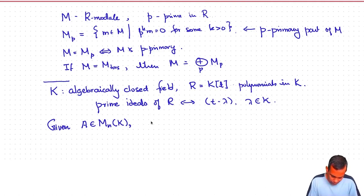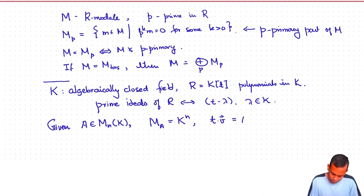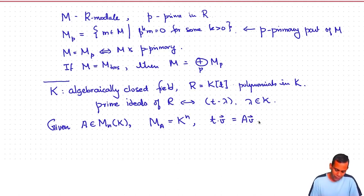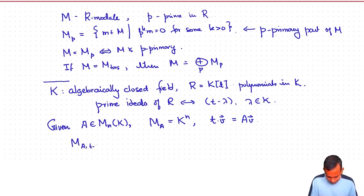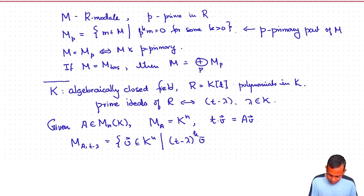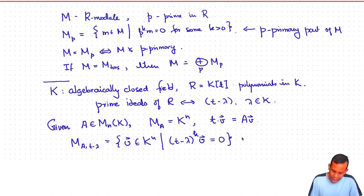Given a matrix A, you can talk about its T − λ primary part. Recall that M_A is the K[T]-module given by K^n where T acts on a vector v by A·v. If you ask what the T − λ primary part of M_A is, it is the set of v in K^n such that (T − λ)^k · v = 0 for some positive integer k. This is sometimes called the lambda generalized eigenspace of A.